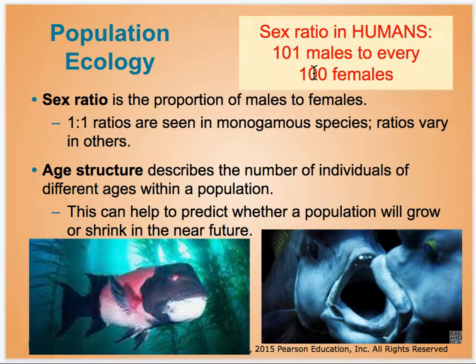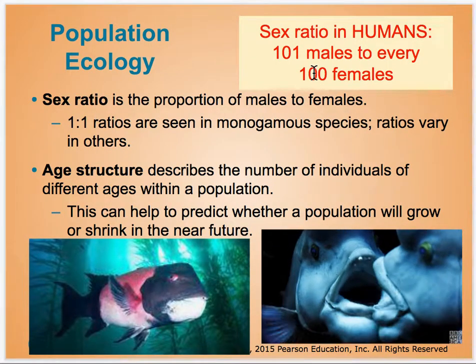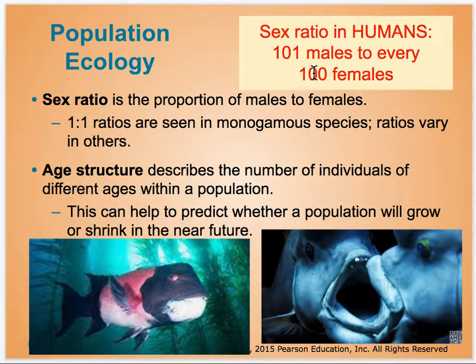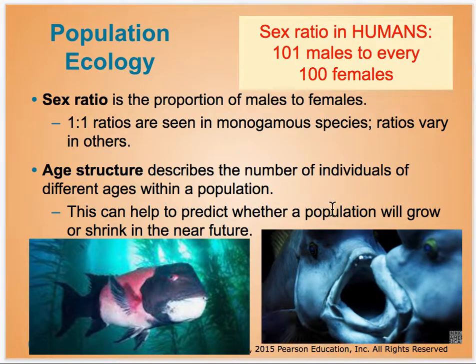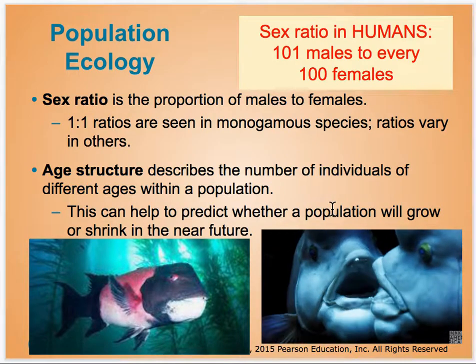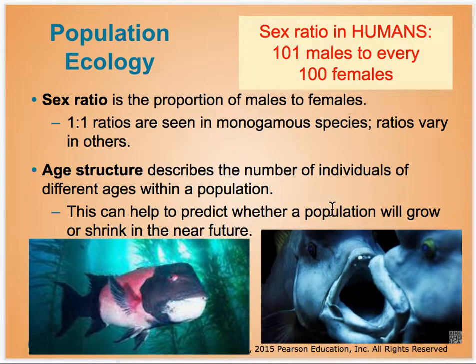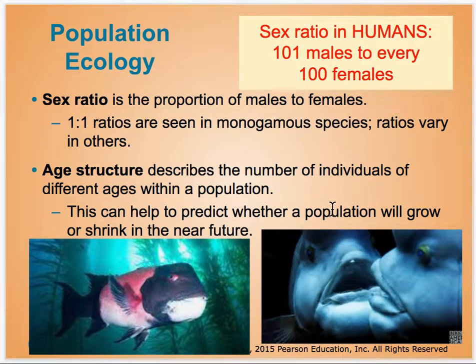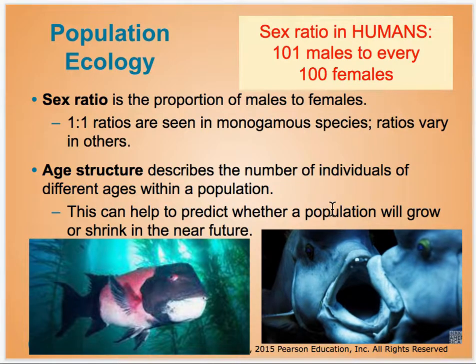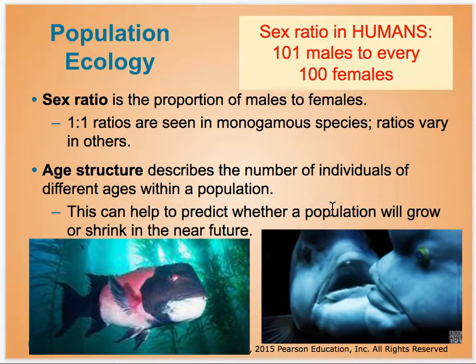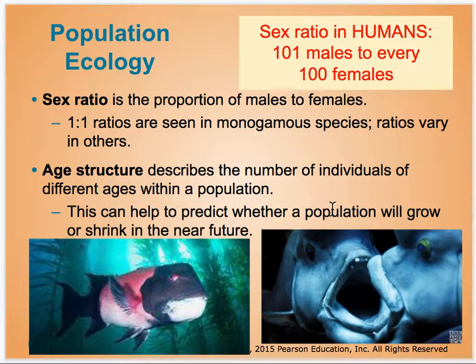Populations also have distinct sex ratios — the number of males to females. Interestingly, in the human population, we have about 101 males born to every 100 females.